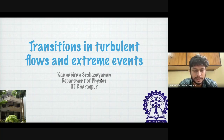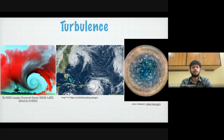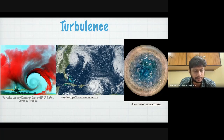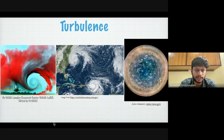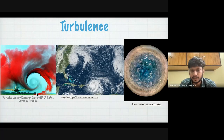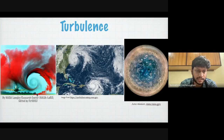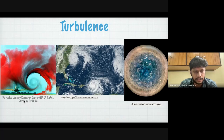Before going into the topic, I want to introduce what we mean by these transitions and why we are interested in extreme events. Turbulence is a well-known problem which is ubiquitous — observed in many different situations. For example, the flow behind an airplane creates wingtip vortices, which generate strong turbulent motions. This is because the typical Reynolds number, which is the ratio of the nonlinear term over the linear dissipation term, becomes very large, making nonlinearity very strong and leading to chaotic or spatiotemporal chaos.